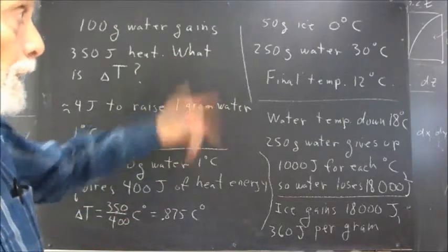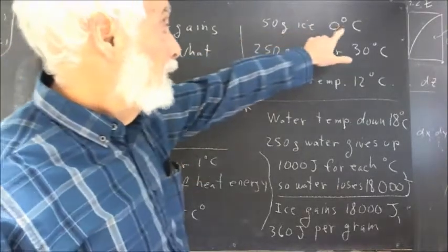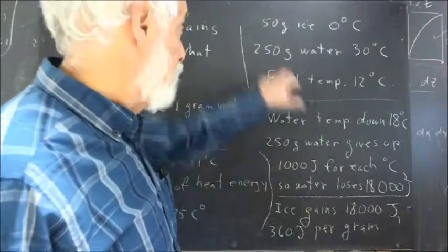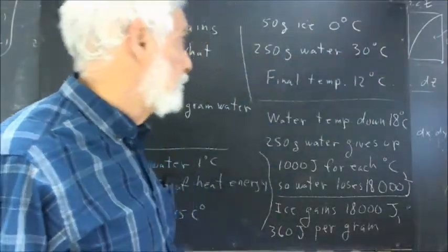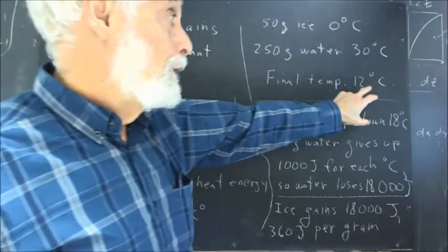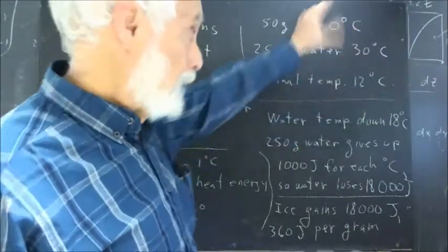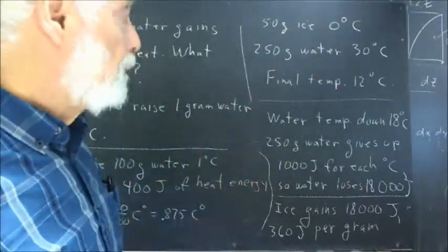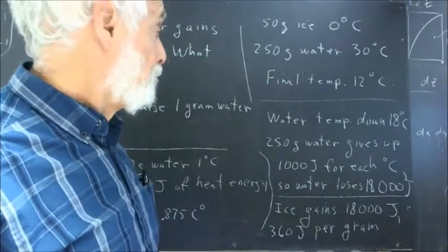Okay, now, slightly more involved problem. 50 grams of ice at 0 degrees Celsius added to 250 grams of water at 30 Celsius comes to a final temperature of 12 Celsius. At least that's what our measurements might indicate in an experiment.